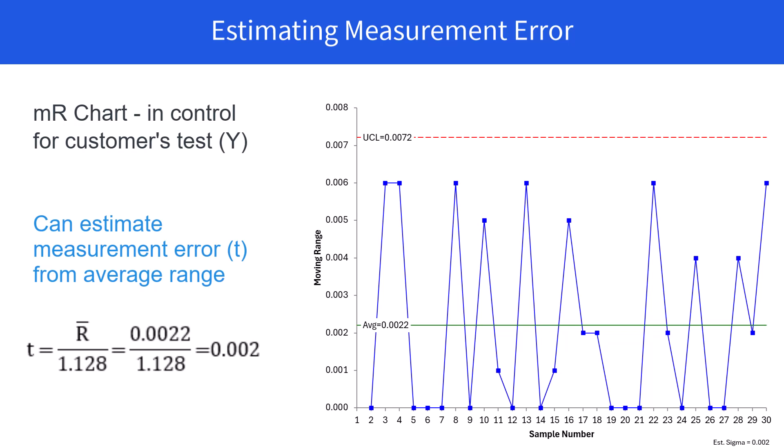So you can estimate the measurement error T from the average range. Average range is 0.0022. You divide that by 1.128, and you get 0.02.